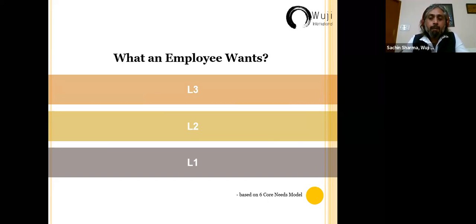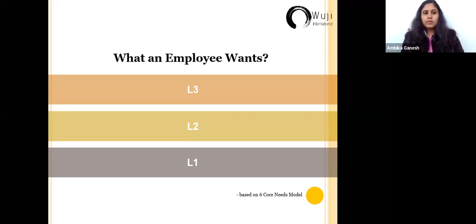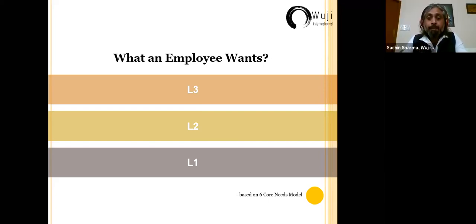The six core needs are divided into three levels, each with two needs. These needs also apply to you personally — understanding them can help with major problems in your own life, not only for the organization. When you relate these needs to yourself and see how they apply to you, you can see that if they apply to you, they apply to everybody. Don't see it as something for another person — first see it for yourself. If you're convinced, it will apply to everyone else as well.